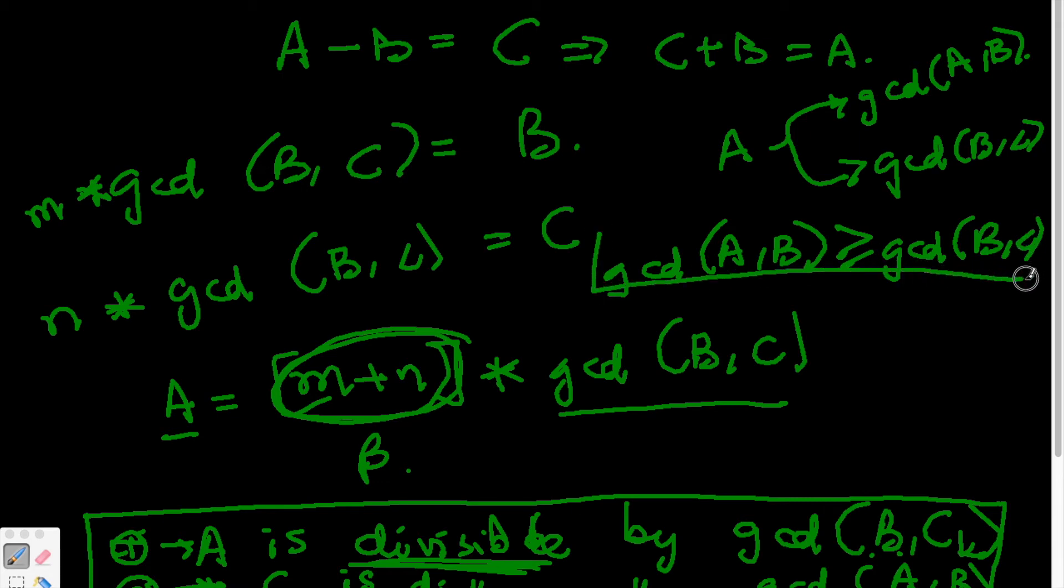Because any number which divides both A and B has to be lesser than or equal to the gcd(A,B). That's the greatest common divisor. That's why the definition is going to be greater than or equal to.